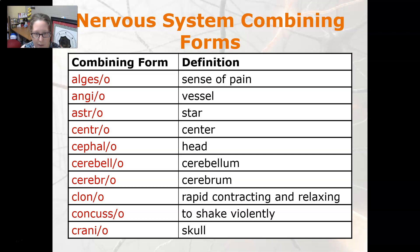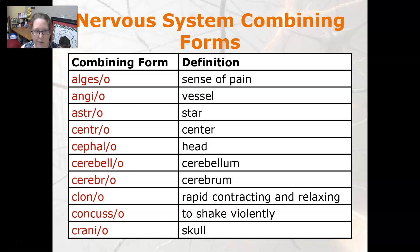Angio is vessel, astro is star, centro is center, cephalo is head, cerebelo is cerebellum, and cerebro is cerebrum. Clono is rapid contracting and relaxing — think tonic-clonic seizures.